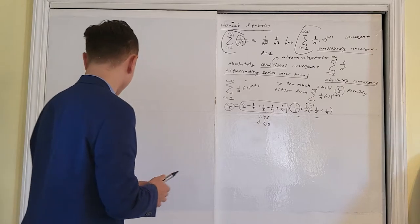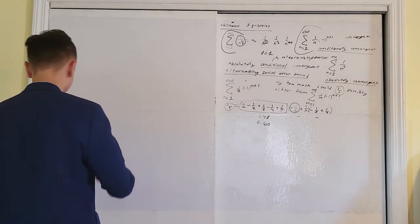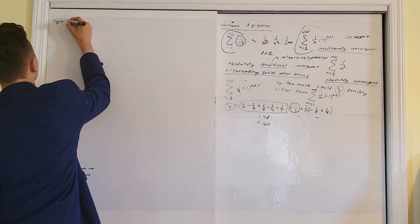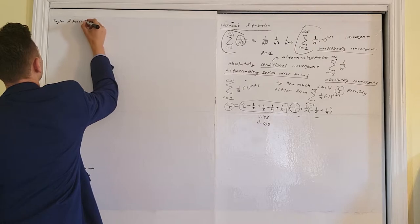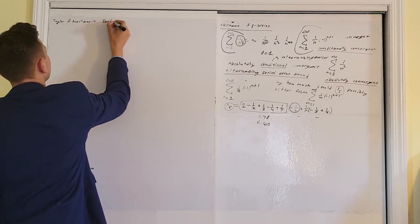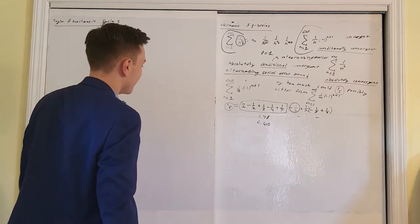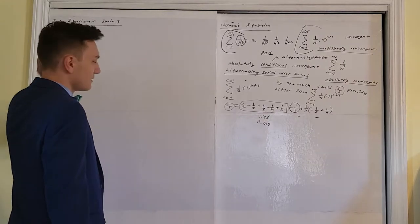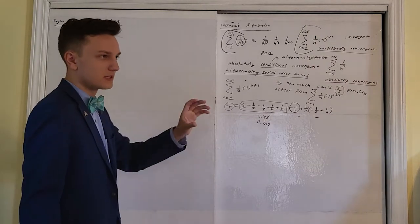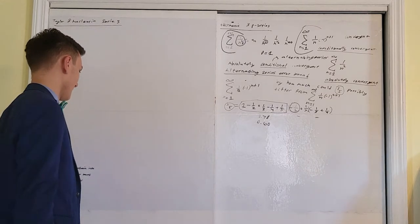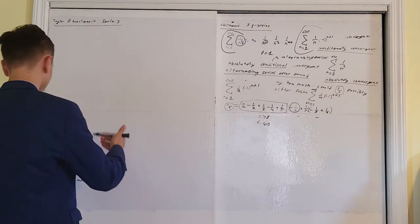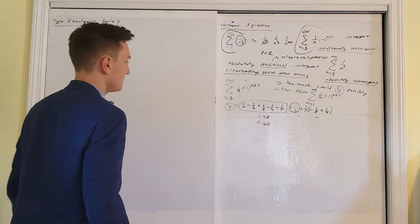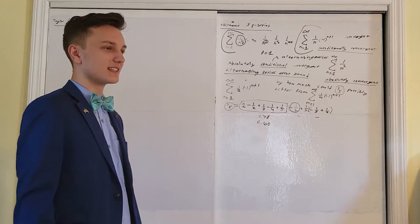Next topic: the Taylor and Maclaurin series. The Maclaurin series is a special type of the Taylor series, so let's start with that. The Maclaurin series — I really like teaching it using this analogy. I'm sure we all remember local linear approximation: you take your original x value plus your change in x, calculate change in y over change in x using the tangent line, and add that to your original y value, giving you a new x and y coordinate.